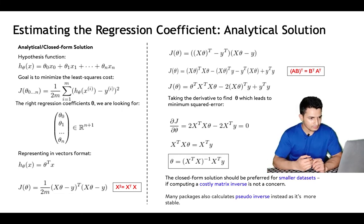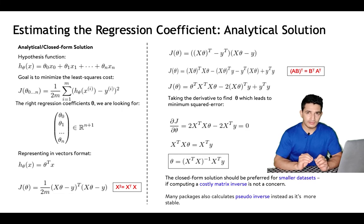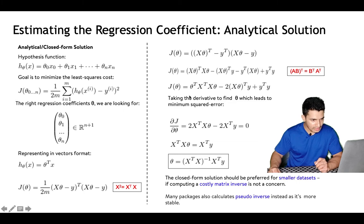Next, we take the derivative of the cost function with respect to θ and equate it to zero to find θ. In the differentiation: terms with two thetas reduce to one theta; terms with one theta disappear; constant terms become zero. After rearranging, we isolate θ.